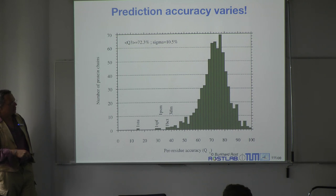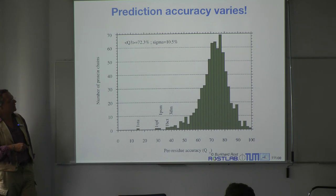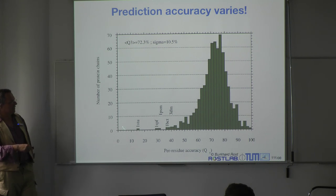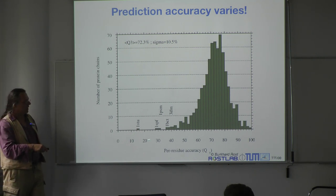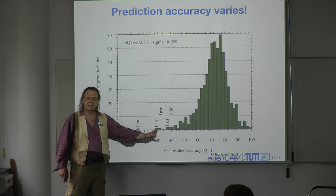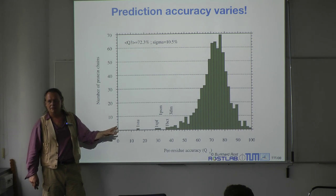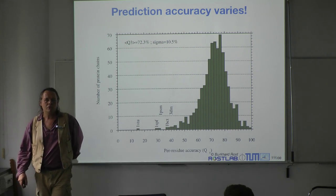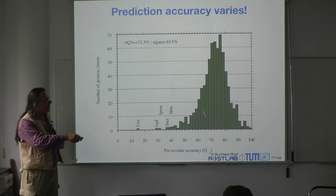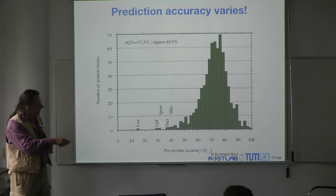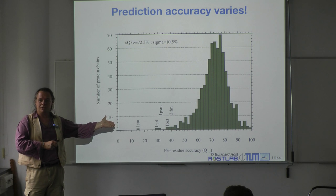You see something else here: a distribution with a standard deviation of roughly 10 percentage points. For some proteins, this better method actually performs less accurately than random, which would sit somewhere around 33–35%, depending on how you cast the random method. Clearly those three proteins would represent really bad predictions. My suggested solution — where the method works, use it; where it doesn't work, take a random prediction because random is better — would that work?